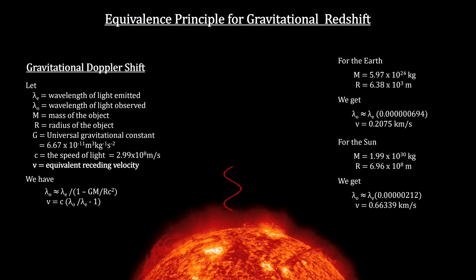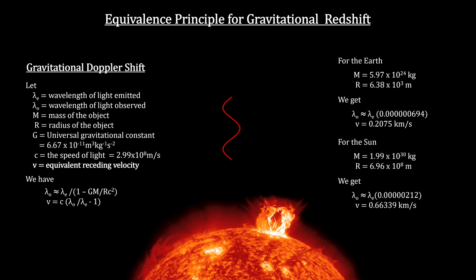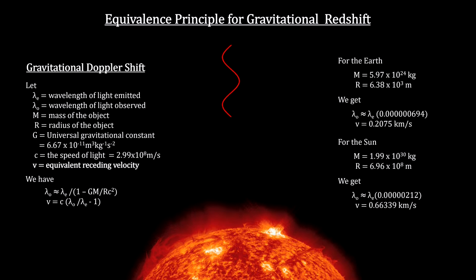Astronomers concluded that in order to measure this effect, they need a star with a calmer surface and larger mass-to-radius ratio. That would be a white dwarf.